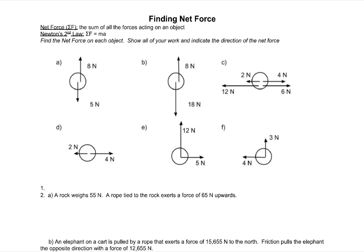Some of those forces might be positive, some might be negative. For part A, the net force is going to be 8 newtons minus 5 newtons. We make the up force positive and the down force negative. Positive 8 plus negative 5 is 8 minus 5, so my net force is 3 newtons, and that 3 newtons is going to be up.